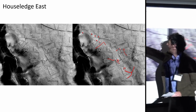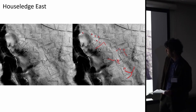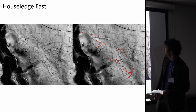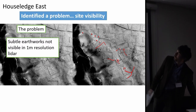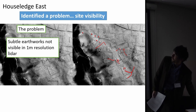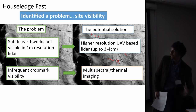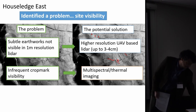There's a site called House Ledge East, excavated by Colin Burgess from Newcastle University in the 1980s. We can see cairns visible in the lidar data, but the rest of the features were mostly mapped from an aerial photograph by Tim Gates, where features were visible protruding through a thin layer of snow as vegetation. This led us to identify a problem: subtle earthworks, particularly relating to the Bronze Age, were just not visible in one-metre resolution lidar. We addressed this through high-resolution UAV-based lidar down to centimetre-level accuracy, and also invested in multispectral thermal imaging, hoping to see crop marks more often.